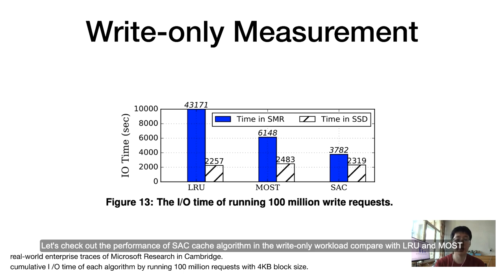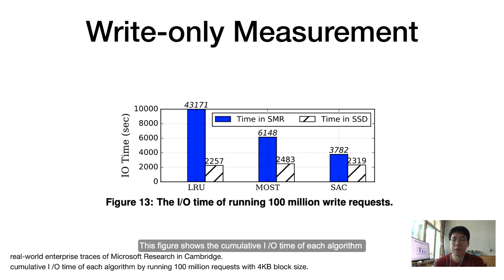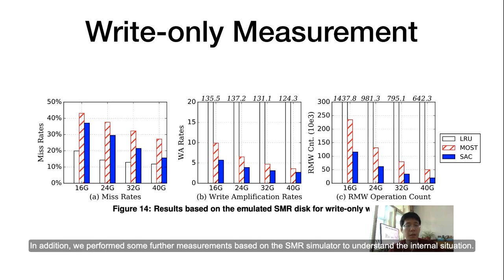Let's check out the performance of SAC cache algorithm in write-only workload compared with LRU and MOST. We benchmarked by real-world enterprise traces of Microsoft Research in Cambridge. This figure shows the cumulative I/O time of each algorithm by running 100 million requests with 4KB block size. For the three algorithms, the I/O time spent on the cache layer is very close, but the I/O time on SMR is quite different. Compared to MOST, SAC reduced the SMR I/O time by 38%.